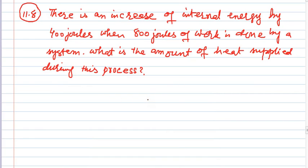There is an increase of internal energy by 400 Joules. Delta U is positive, 400 Joules increase.